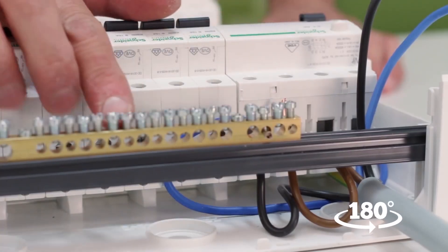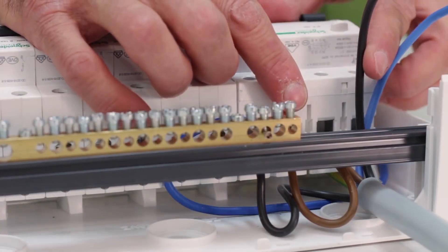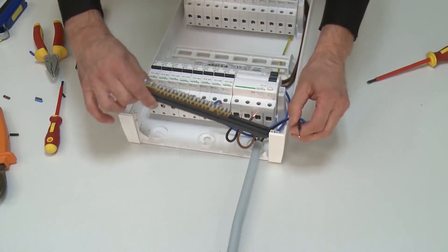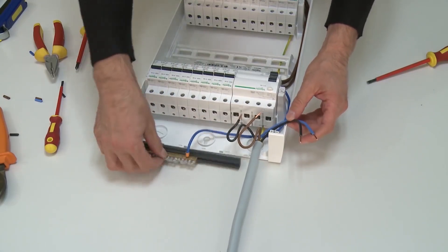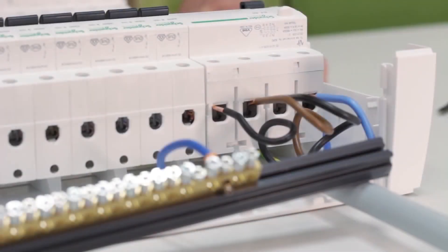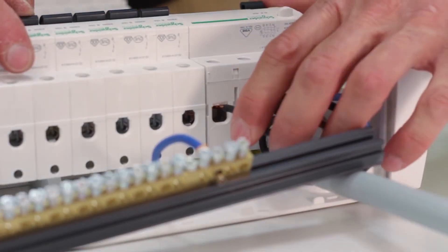If the neutral bus part bothers you when inserting the supply cable, you can easily dismantle it. And now you have enough space to prepare the conductors. We have prepared the conductors and now we connect them.